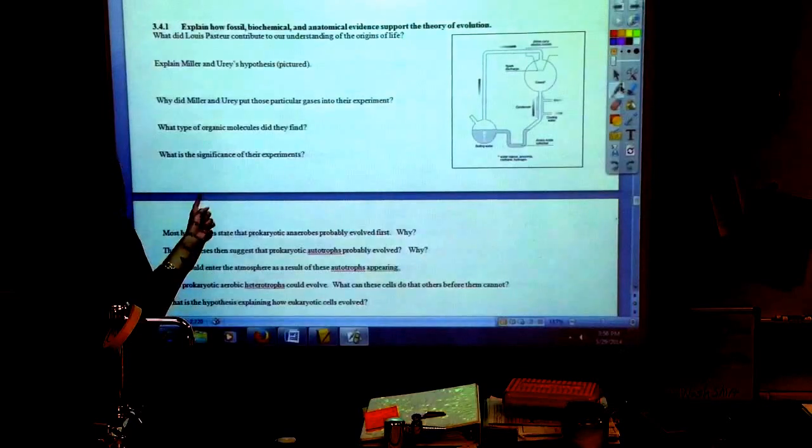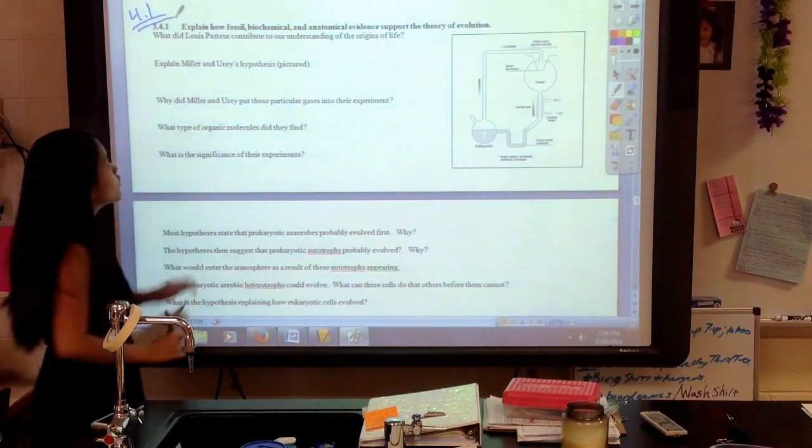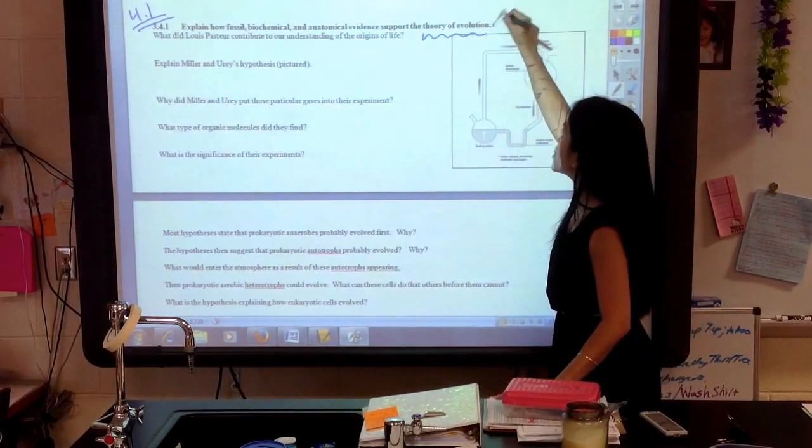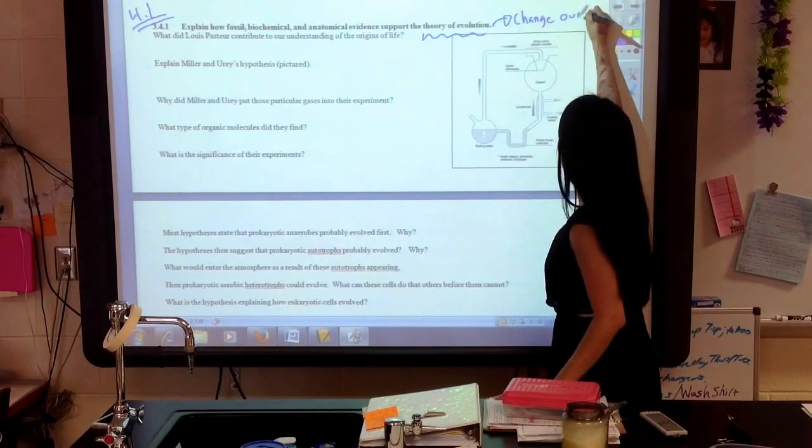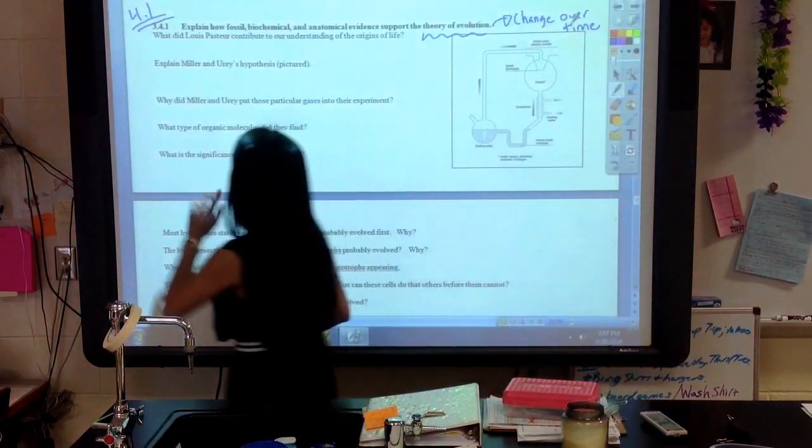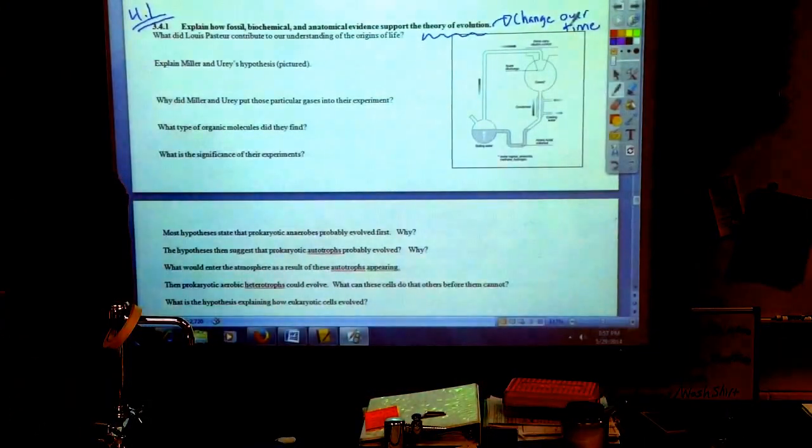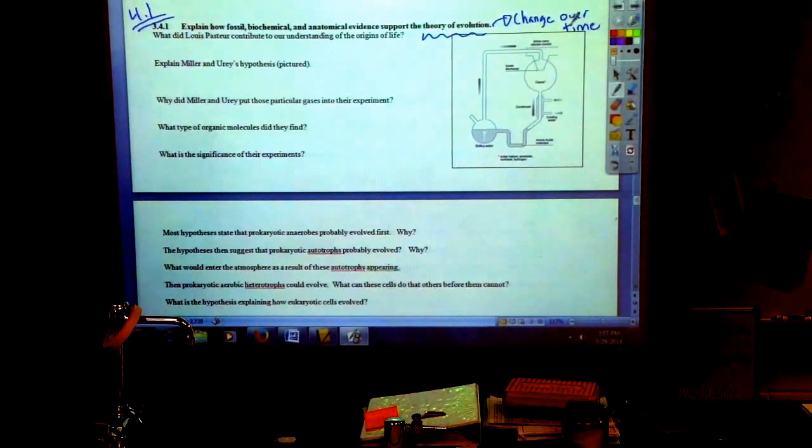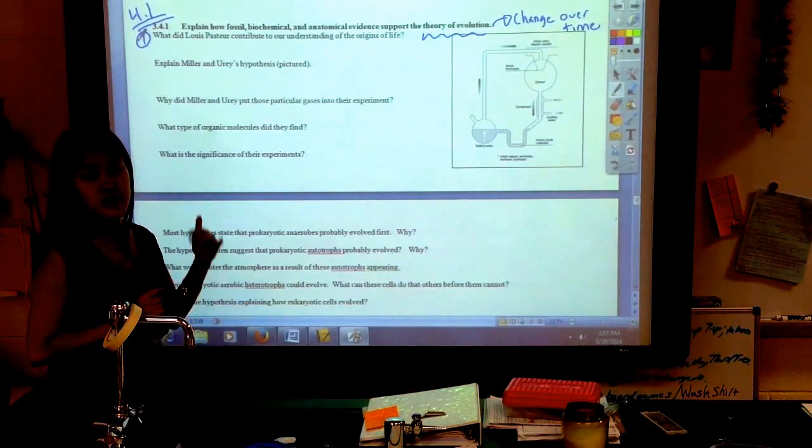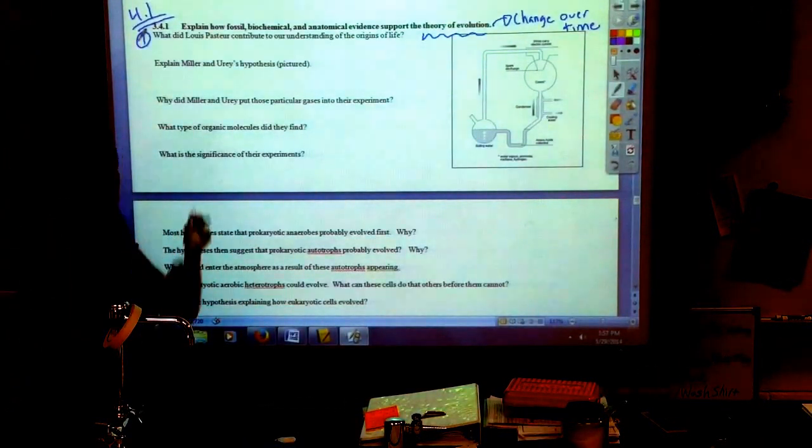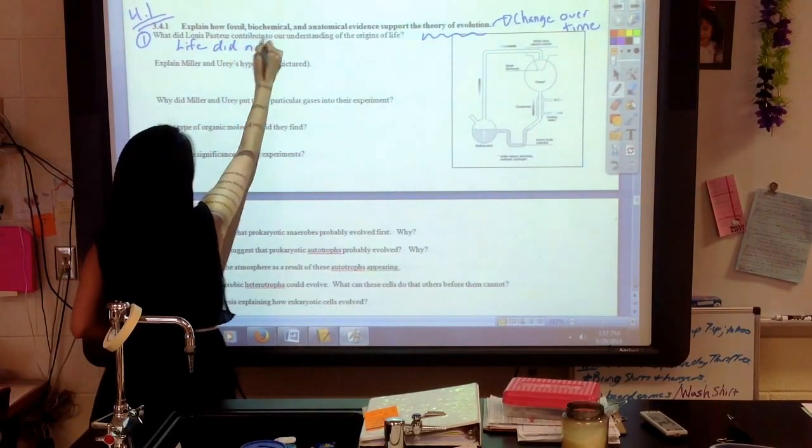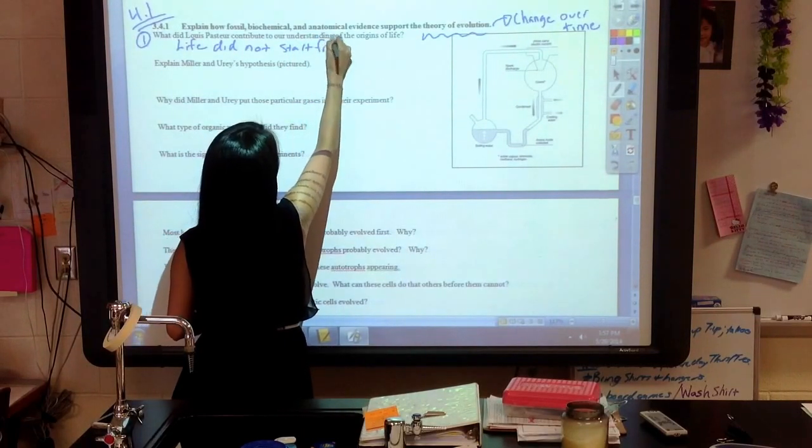In this section, we're actually starting to look at Unit 4.1. In Unit 4.1, we're looking at evolution, the theory of evolution. Remember, in very general terms, evolution just means change over time. Initially, we start talking about the change of cells over time. In the first question, it said, what did Louis Pasteur attribute to our understanding of the origins of life? Louis Pasteur showed us in his broth example that life did not come from non-living things.